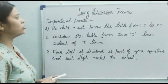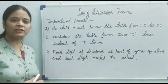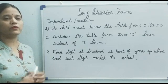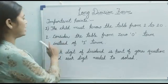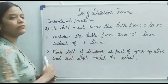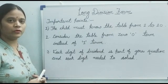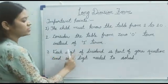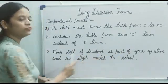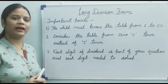In closing, here are some important points necessary for doing division. First, the child must know the tables from 2 to 20 for faster calculation. Second, consider the table starting from 0's instead of 1's — for example, 2 zeros are 0, 3 zeros are 0, instead of 2 ones are 2. Third, each digit of the dividend is part of your question and each digit needs to be solved. I hope you understood today's topic — please like and subscribe to my channel. Thanks for watching.